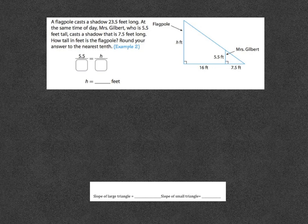All right, example three. This one says a flagpole casts a shadow of 23.5 feet long. At the same time of day, Ms. Gilbert, who is 5.5 feet tall, casts a shadow that's 7.5 feet long. So, how tall is the flagpole? And then it says round your answer to the nearest tenth. So ultimate goal is I want to know how tall this flagpole is, which could be a real life situation. You need to know how tall the pole is.